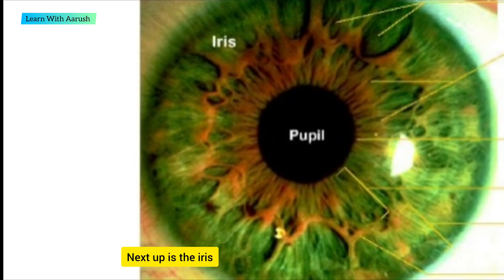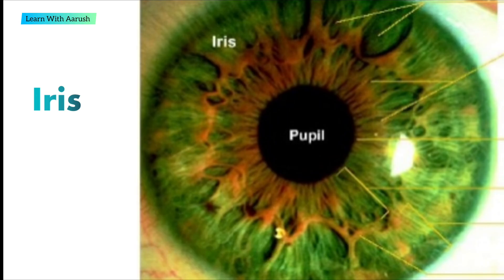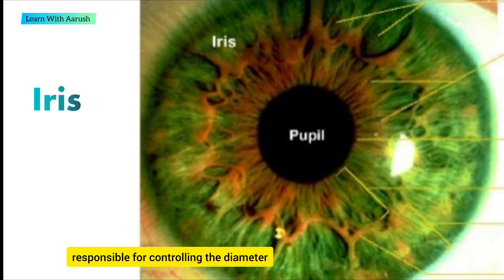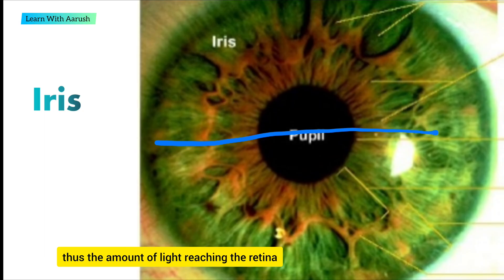Next up is the iris. In humans and most mammals and birds, the iris is a thin annular structure in the eye, responsible for controlling the diameter and the size of the pupil, and thus the amount of light reaching the retina.